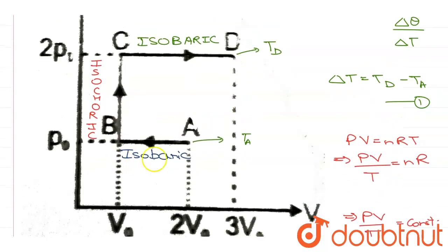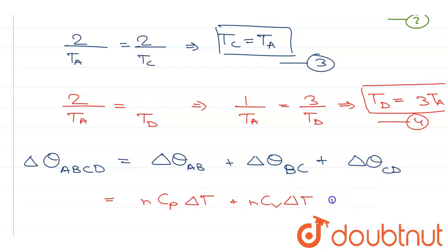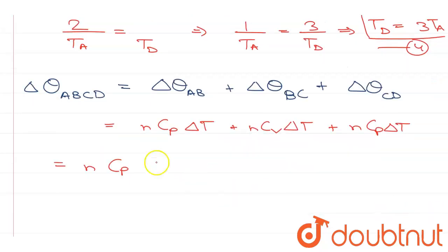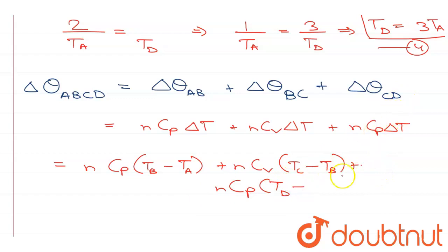For an isobaric process, the change in heat is NCP·ΔT. For an isochoric process, it is NCV·ΔT. So ΔQ_ABCD = NCP(TB − TA) + NCV(TC − TB) + NCP(TD − TC).